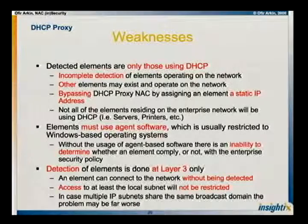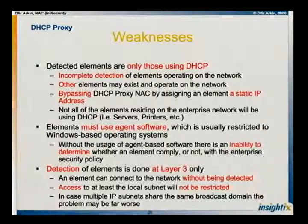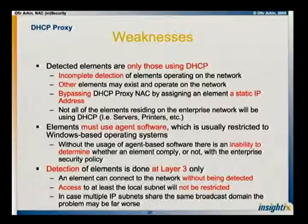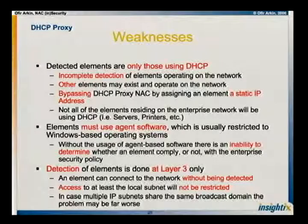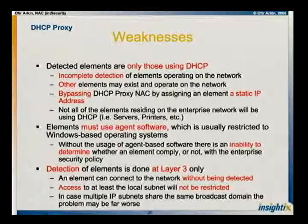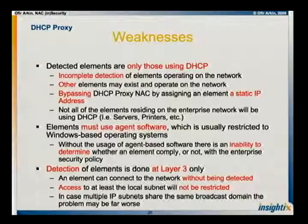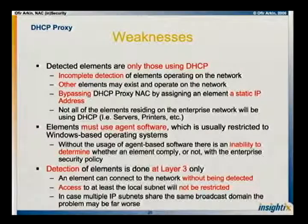The easiest form of bypassing this solution — I don't want to use the word lame, but I said it — is just to assign a static IP address to the machine, and basically you're off to go. The problem also with different companies is that part of the networks will be shared by servers and desktops, so part of the network will be DHCP-based, part will not. The people that need to know about it know about it, so if someone is a bit familiar with the IT network, he can easily assign himself an IP address that will not be blocked.